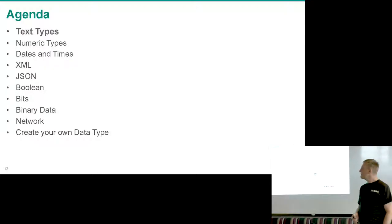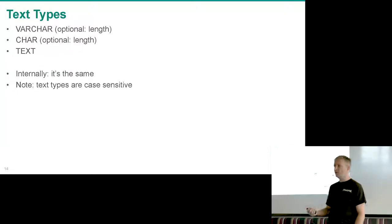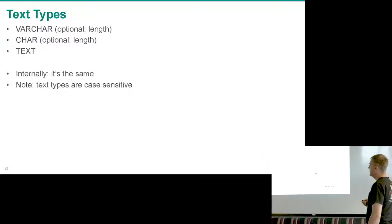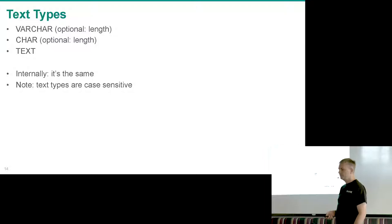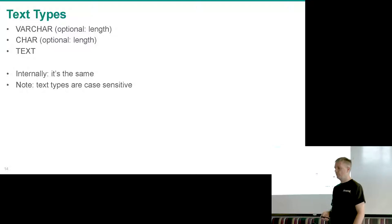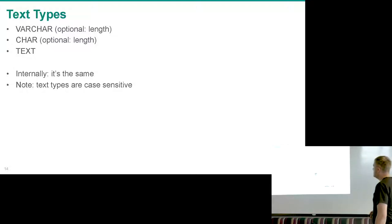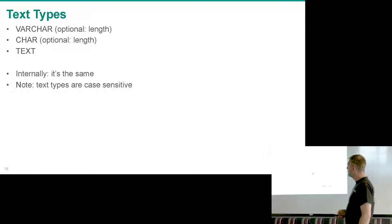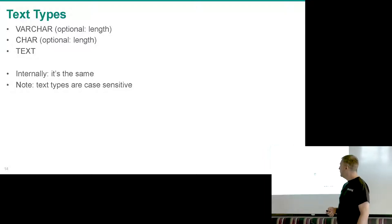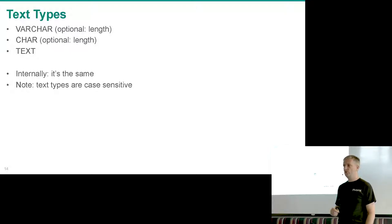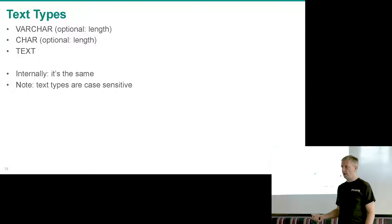We have three text types in Postgres and internally they're all the same. We have varchar and char — both can have an optional length — and we have text. All of them can store up to roughly one gigabyte. Internally the representation is the same, and be careful: all three are case sensitive. If you want to do a case-insensitive comparison you have to use ILIKE, not LIKE.